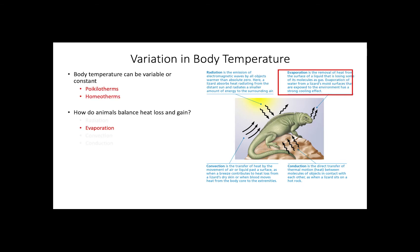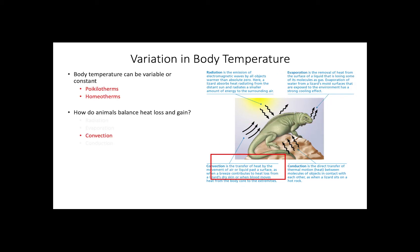The second process is evaporation — the removal of heat in the form of gas molecules from a liquid, which often refers to the evaporation of water via sweat. Next, we have convection: the transfer of heat by the movement of air or a liquid passing over a surface. For example, a breeze of warm air passing over the skin of an animal will deliver heat, which can be absorbed by the animal if the goal is to get warm.